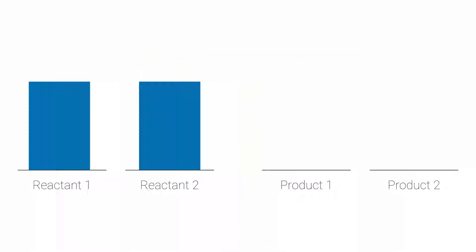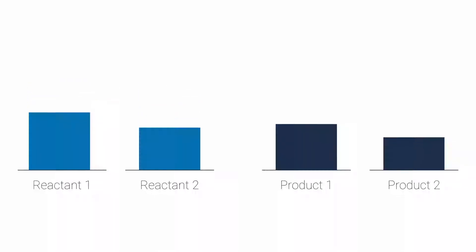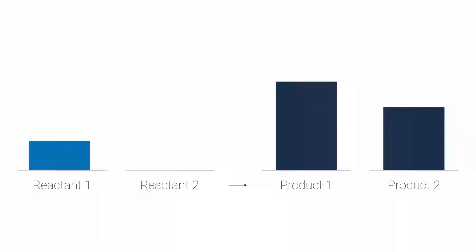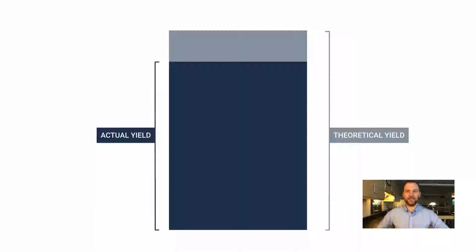So I want to begin this video with a visual representation. Let's say you have a reaction with two reactants forming two products. The reaction begins and it looks like reactant 2 is going to be a limiting reactant here, so the reaction stops at this point. Let's take a look at product 1. We've calculated that we should get this much, but maybe we actually only get this much.